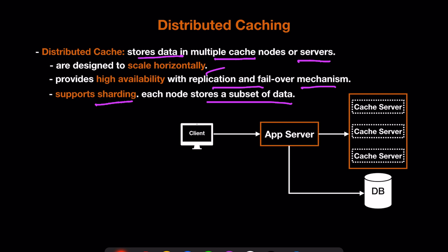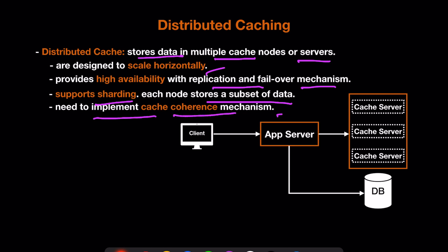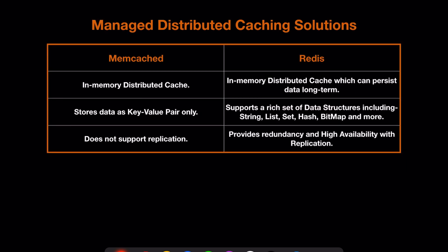Distributed caching also supports sharding, where each node stores a subset of data. For example, with ten thousand users, we store data across different servers — the first 100 users on one server, the next 100 on another, and so on. When we have multiple replicas of cache servers, we also need to think about cache coherence mechanisms. Distributed caching has obvious benefits, but it is complex to implement, which is why we typically use managed distributed caching solutions.